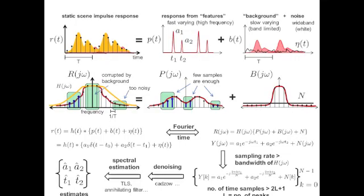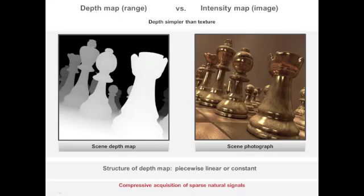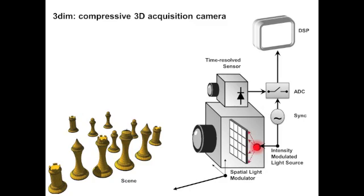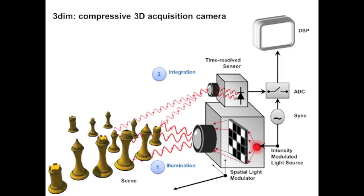By developing new signal processing techniques, we allow 3Dim to exploit a key property of natural signals: that natural scene depth is more compressible than a scene photograph. 3Dim works by illuminating the scene with a series of spatiotemporally modulated patterns and by focusing all of the reflected light at a single time resolved sensor where it is sampled and buffered.